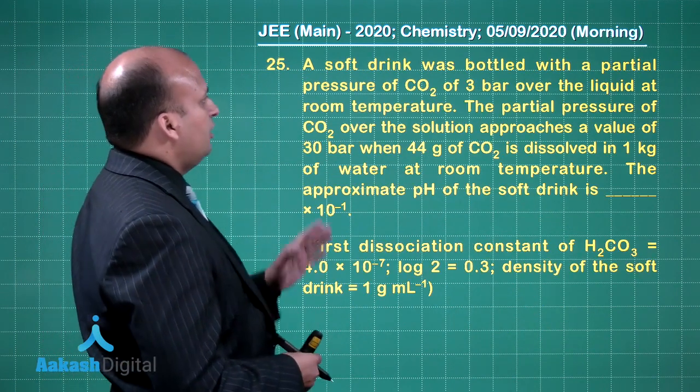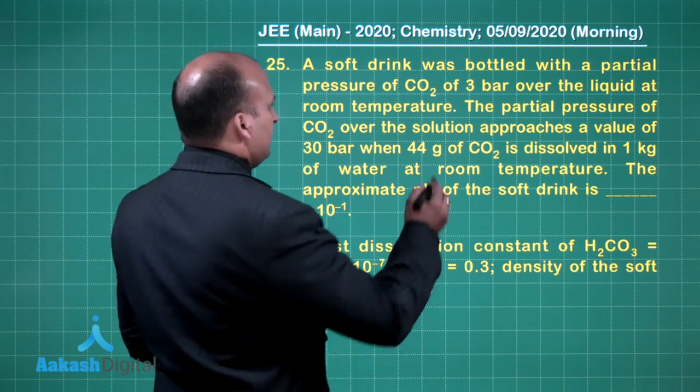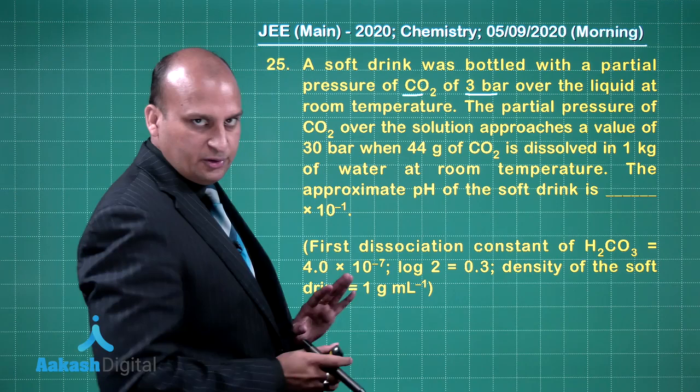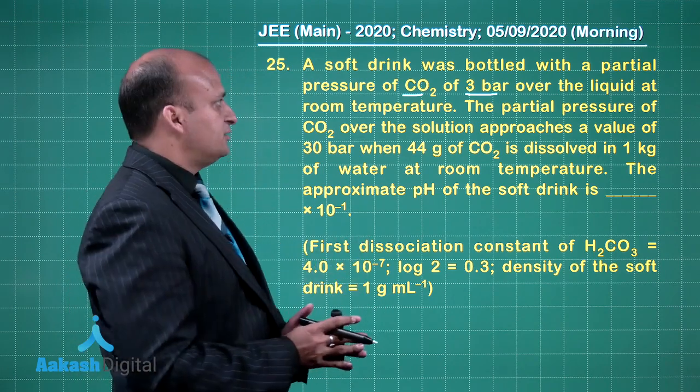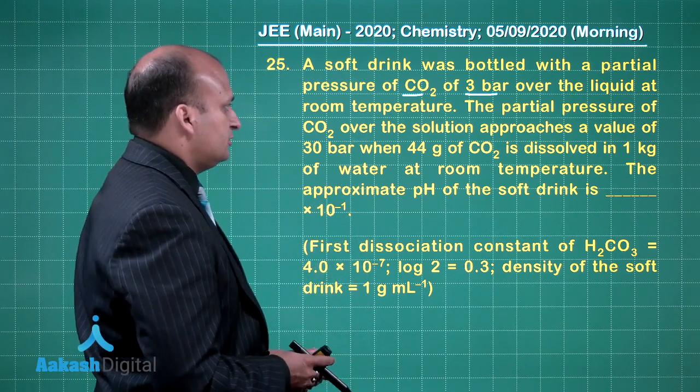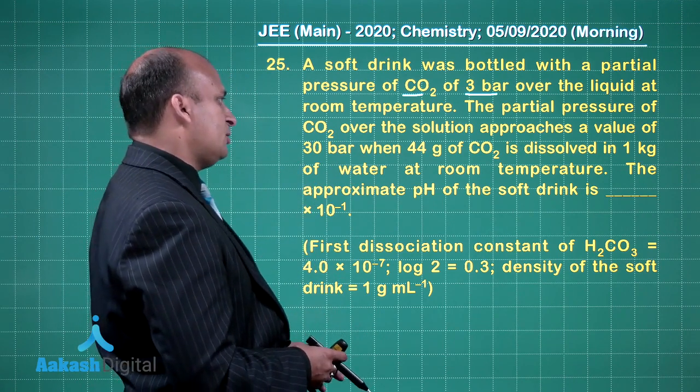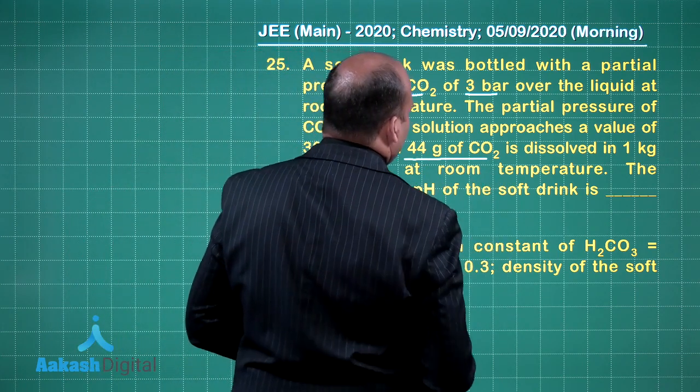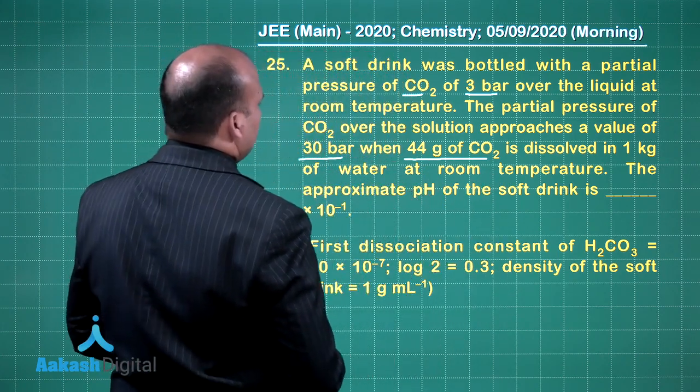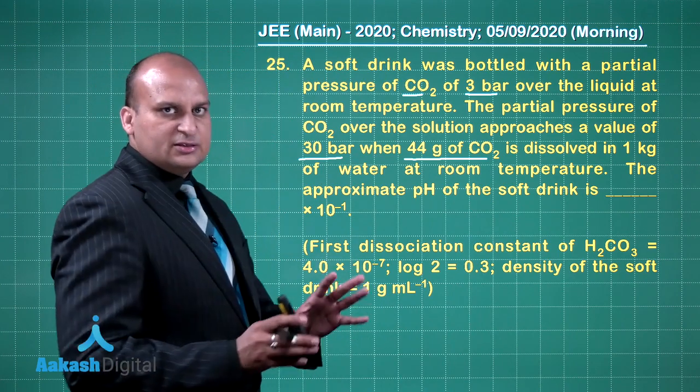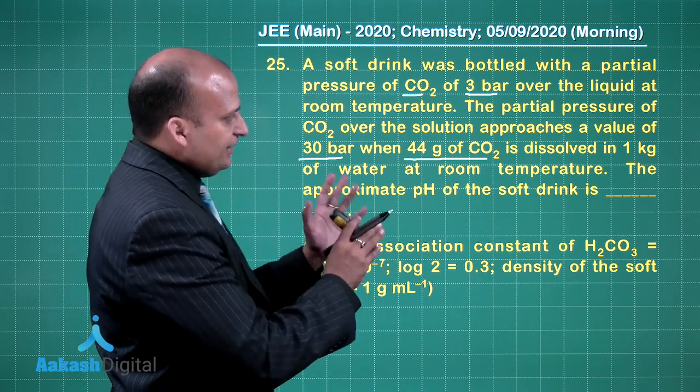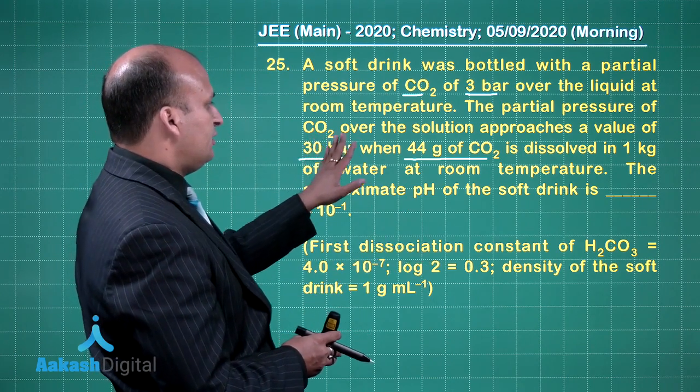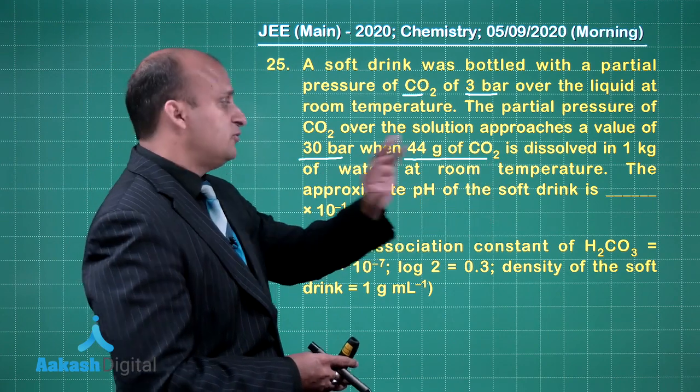Question number 25. A soft drink was bottled with a partial pressure of carbon dioxide of 3 bar over the liquid at room temperature. The partial pressure of CO2 over the solution approaches a value of 30 bar when 44 grams of carbon dioxide is dissolved in 1 kg of water. This is data given to us.